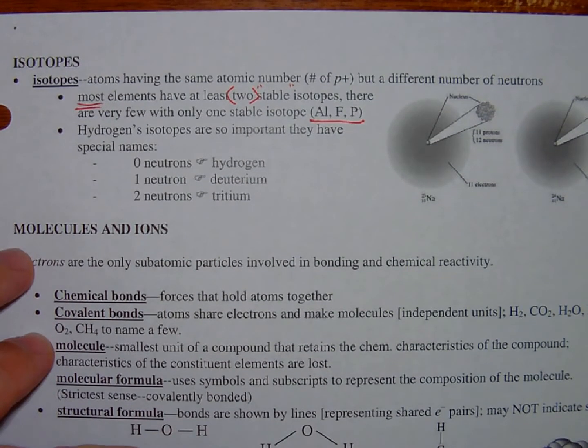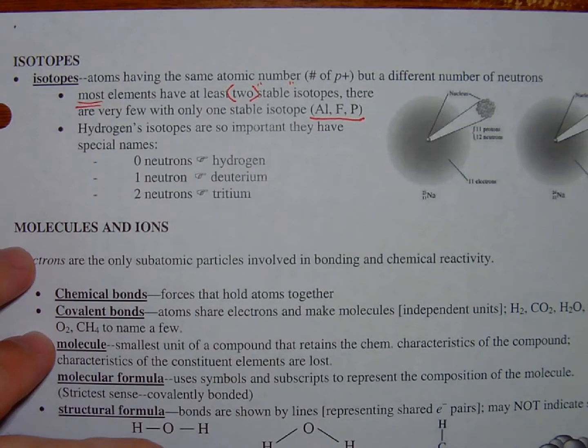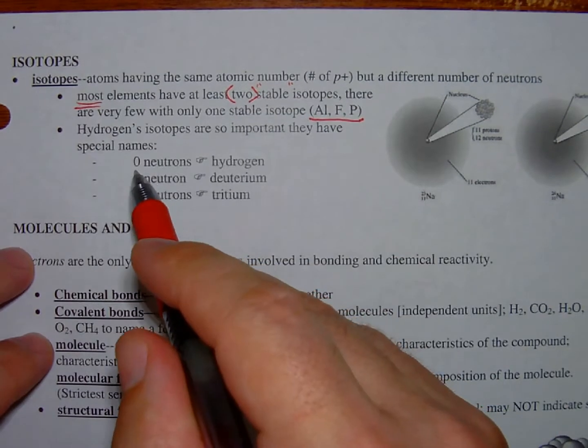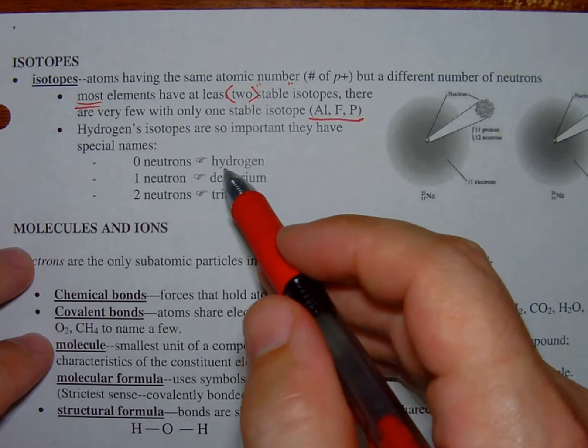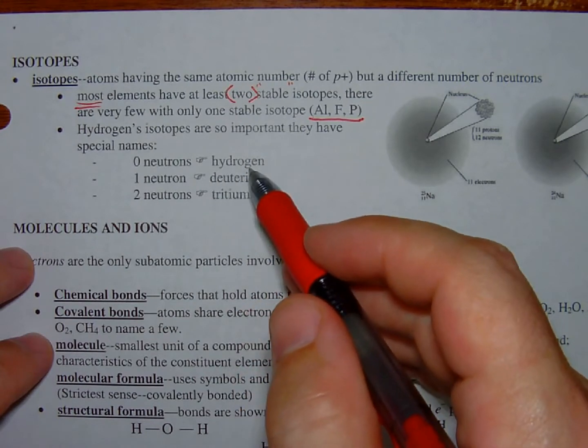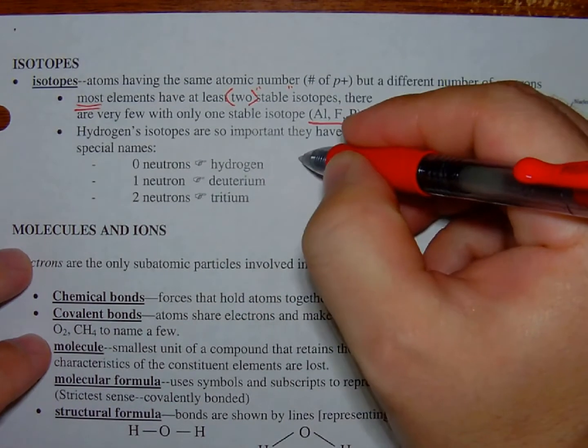Hydrogen's isotope is so important that it actually has special names, right? When there's no neutrons, zero neutrons, you just have one proton, which is called the hydrogen atom. That's the name—I'm going to look like this.